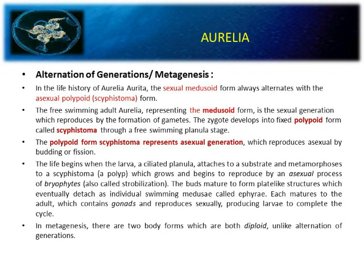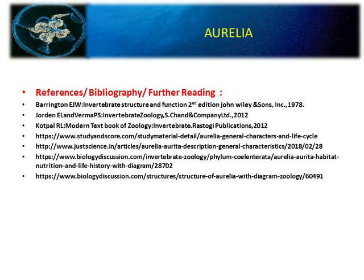A unique feature of Aurelia is alternation of generation in its life history. The sexual medusae alternate with the asexual polypoid stage — meaning both polyp and medusa forms are found in Aurelia, so this is called alternation of generation. The free-swimming adult Aurelia represents the medusa and sexual generation, producing gametes. The zygote develops into the polypoid scyphistoma through the free-swimming planula stage. This alternation is also known as metagenesis. Thank you.